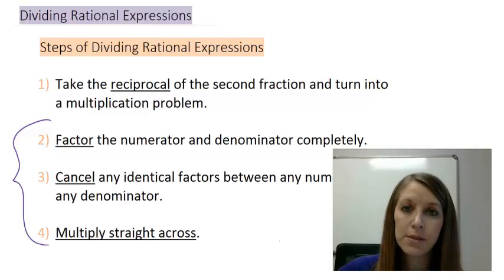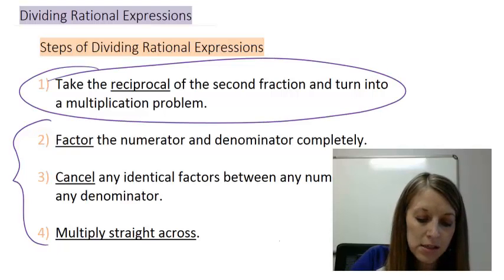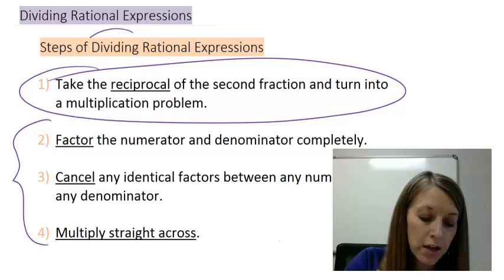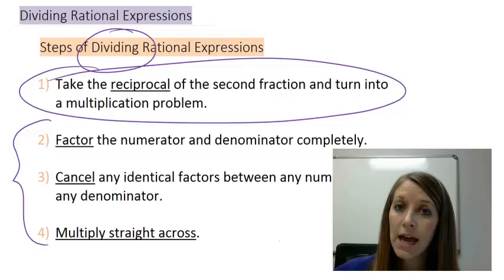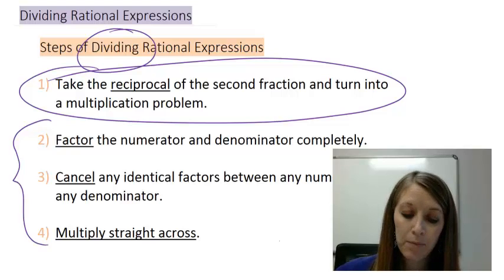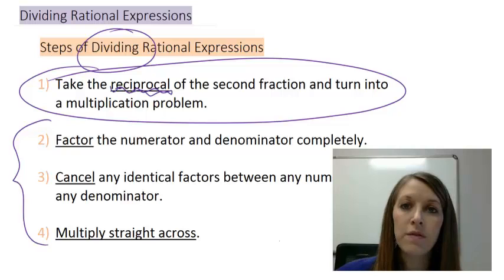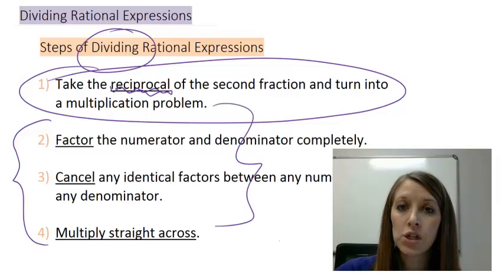Look at the last three steps — they are exactly the same. We only have one additional step, and that is the first step. If we're ever trying to divide fractions, the saying goes it's as easy as pi: flip the second fraction and multiply. So we take the reciprocal of the second fraction and turn it into a multiplication problem, then follow our multiplication steps.